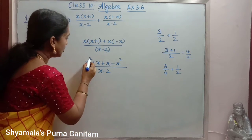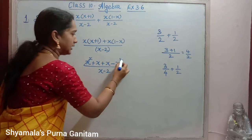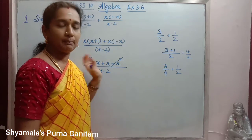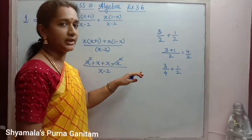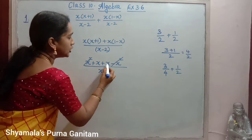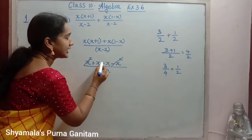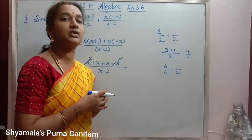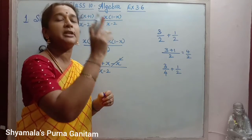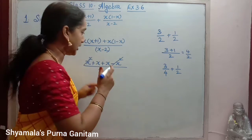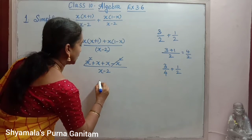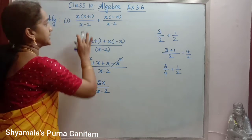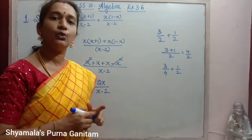So here we have plus x squared and minus x squared, which cancel each other out. In the numerator we are left with x plus x. Adding like terms: 1x plus 1x gives 2x. So the simplified answer is 2x over (x minus 2).